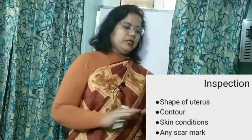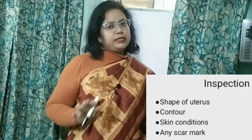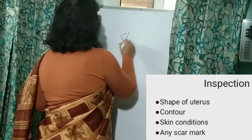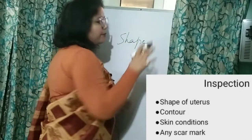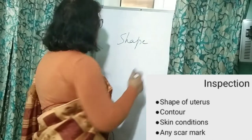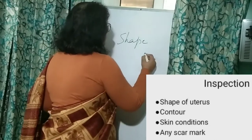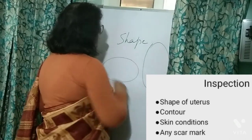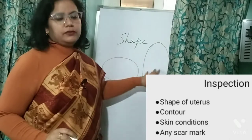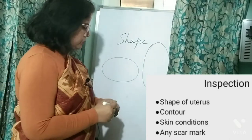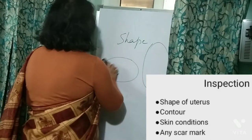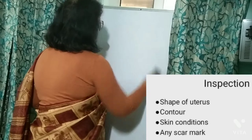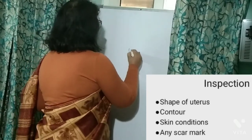Now you will make a quick inspection. In inspection, note the shape of the distended abdomen — how it is distended. In pregnancy it is vertically ovoid, whereas it may be transversely ovoid in other conditions. Also, the shape of the stretching of the umbilicus is important: in pregnancy it is vertically stretched.